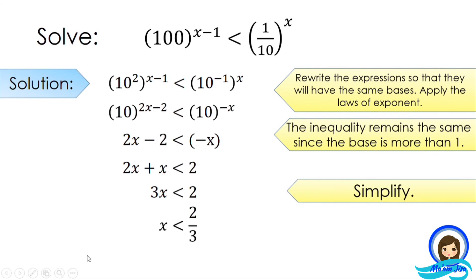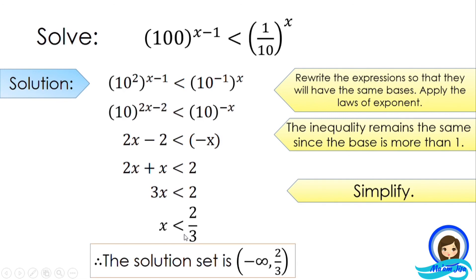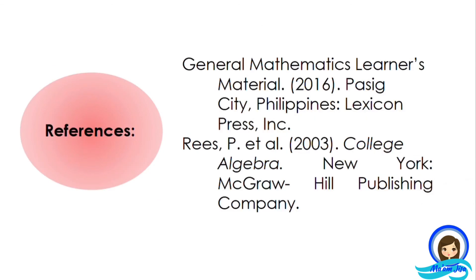Take note, it is less than, so 2/3 is not included in the solution set. Our solution set is from negative infinity to positive 2/3. We use parenthesis, not bracket. So that is how to solve exponential inequalities — make sure the bases are equal and then apply the property of inequality.